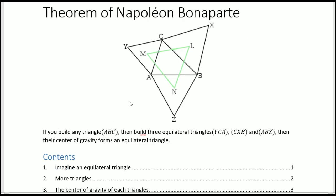The theorem states that if you build any triangle ABC, no matter how it's realized, you can build three equilateral triangles based on each of the sides. So first side AC, you will build an equilateral triangle with point Y, and same with all other sides. And the theorem states that if you take each of the centers of gravity, they form an equilateral triangle.